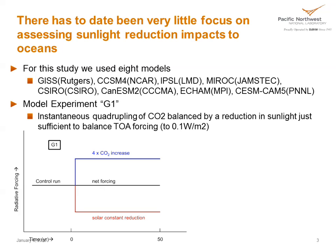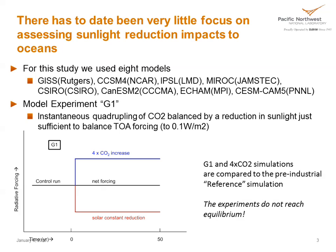We're going to focus primarily on model experiment G1. What we do is to run a simulation with a control set of forcings — usually pre-industrial forcings — for a period of time to reach equilibrium, and then instantaneously quadruple CO2 and simultaneously balance this with a reduction in sunlight just sufficient to balance the top-of-atmosphere forcing to about a tenth of a watt per meter squared. It's usually between 3 and 5 percent sunlight reduction for these models.